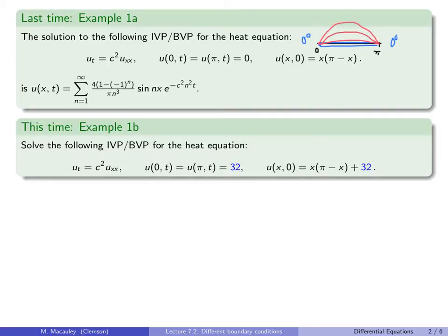Recall how we solved this. We assumed that u(x, t) separates as f(x) times g(t), then plugged this back in to figure out what f and g were. This time I'm going to show you a very similar PDE, just with boundary conditions equal to 32 instead of zero.